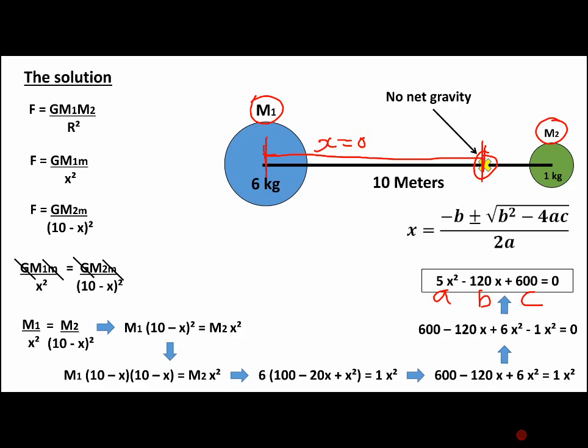So if we plug in our equation into that, we end up with two answers, like always with a quadratic. And the answers will be X equals 7.1 or 16.9.